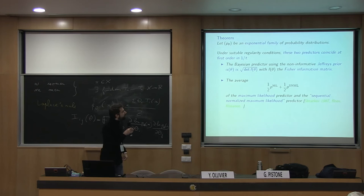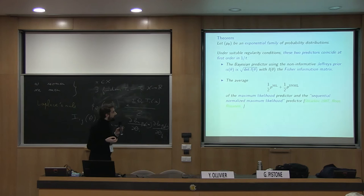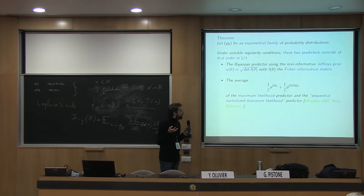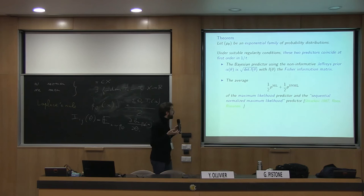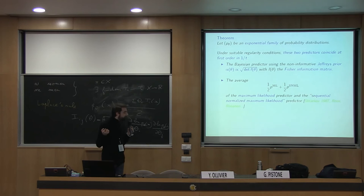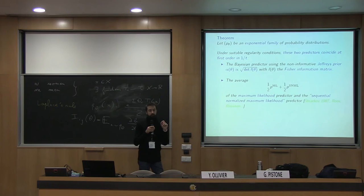P_ML is the maximum likelihood estimator we saw before. P_SNML is the so-called sequential normalized maximum likelihood predictor, based on ideas from universal coding theory. It was introduced by Shtarkov about 30 years ago and expanded upon by many people, including Rissanen in particular. It's really based in information theory and coding theory, and it's a little bit like Laplace's rule. In fact, for Bernoulli distributions, P_SNML is equal to Laplace's rule.